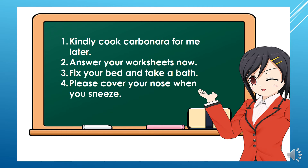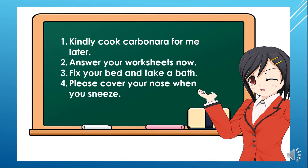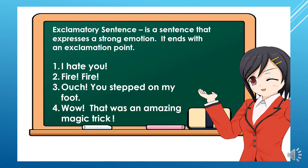Examples of imperative sentences: 'Kindly cook carbonara for me later.' 'Answer your worksheets now.' 'Fix your bed and take a bath.' 'Please cover your nose when you sneeze.' An exclamatory sentence is a sentence that expresses a strong emotion and ends with an exclamation point. For example: 'I hate you!' 'Fire! Fire!' 'Ouch, you stepped on my foot!' 'Wow, that was an amazing magic trick!'